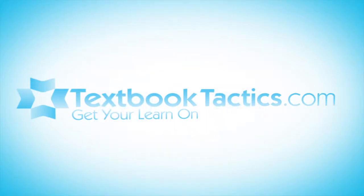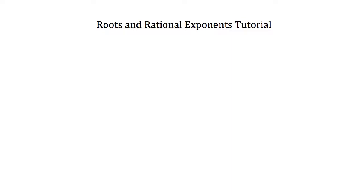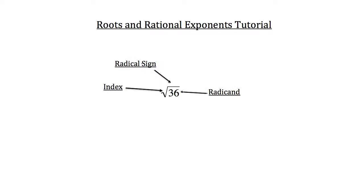This is the roots and rational exponents tutorial. Let's begin by discussing a common square root. There are some mathematical terms you should know about roots. The first is the radical sign — this is just what you're used to seeing as the square root symbol. Next is the index, which refers to the degree of the root and is written inside the little nook on the radical sign. On a square root, you don't actually write the index — it's assumed to be 2. The radicand is the number underneath the radical sign — the number you're taking the root of. In this case, the radicand is 36.